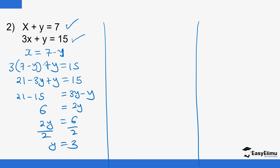Back substitute into equation 1, which is simpler. x plus y equals 7, and y is 3, so x plus 3 equals 7. Moving 3 to the other side: x equals 7 minus 3, which equals 4.